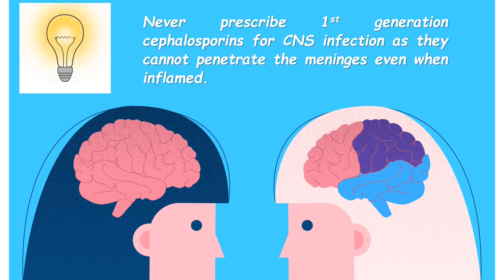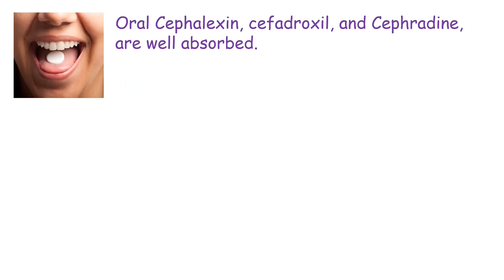Against anaerobes, first generation cephalosporins are active against common anaerobes but inactive against Bacteroides. It is important to remember that first generation cephalosporins should never be prescribed for CNS infections, as they are unable to penetrate the meninges even when the meninges are inflamed.